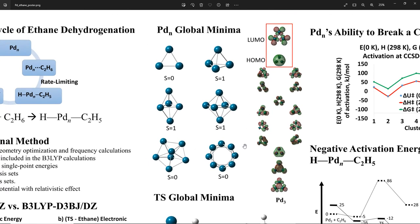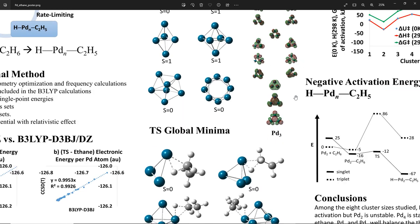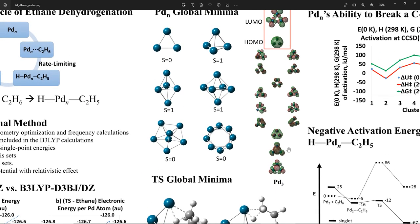Those are the palladium cluster global minima from size 3 all the way to size 8. S is the spin quantum number. For example, when we look at this, we know the global minimum of PD3 has a triangular shape with all electrons paired at the singlet electronic state. And this is the MO diagram of PD3. We can see the LUMO is made of d-orbitals, while the HOMO is made of the 5s-orbitals. Below HOMO, we have 14 MOs that are made of d-orbitals.